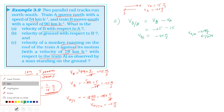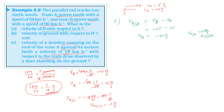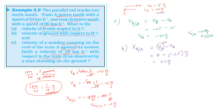Second one is velocity of ground with respect to B. Velocity of ground with respect to B — since B is moving at 25 meter per second towards south, the ground appears to move in the opposite direction. So velocity of ground with respect to B is 25 meter per second towards north.